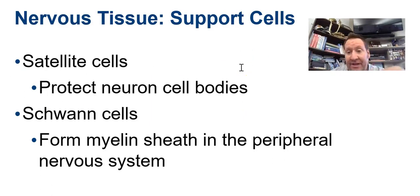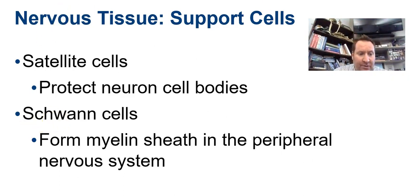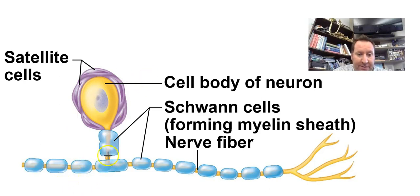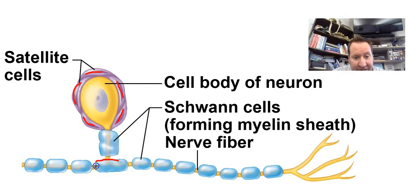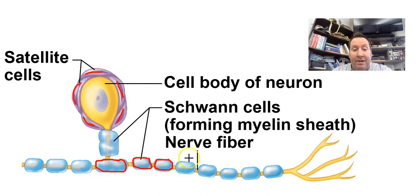Now we move into the peripheral nervous system, which has its own unique neuroglial cells: satellite cells and Schwann cells. Satellite cells act somewhat like astrocytes — they wrap around the cell body and provide nourishment and protection to the neuron. Schwann cells are individual cells wrapping around the axon, producing myelin for PNS cells. In the peripheral nervous system, you're no longer protected by bone, so protecting the cell body is vitally important.